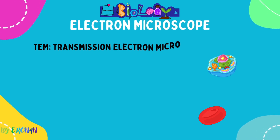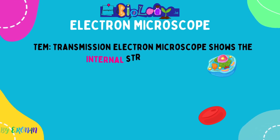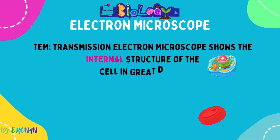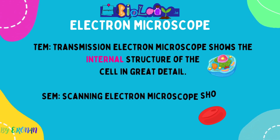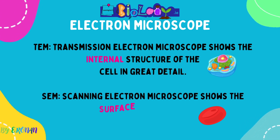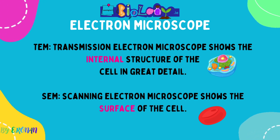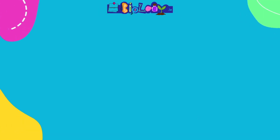There are two types of electron microscopes. The TEM, transmission electron microscope, shows the internal structure of a cell in great detail. The SEM, scanning electron microscope, shows the surface. A useful memory aid: S for scanning, S for surface; T for transmission, T for internal.